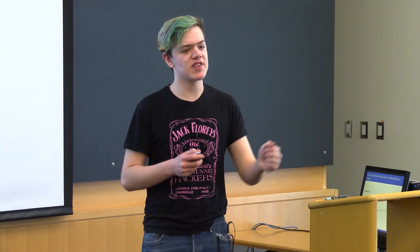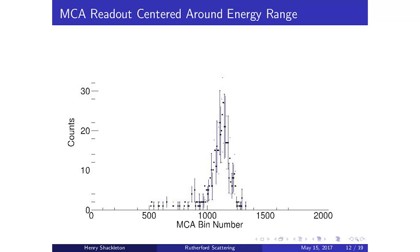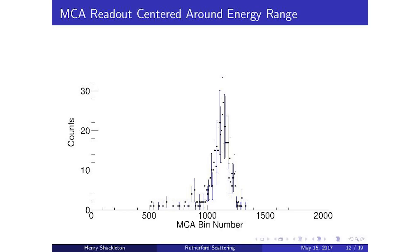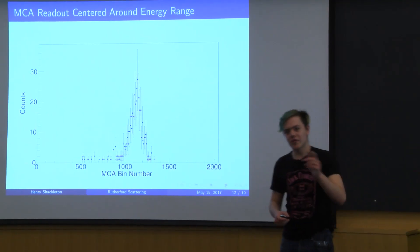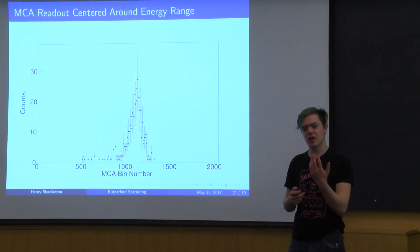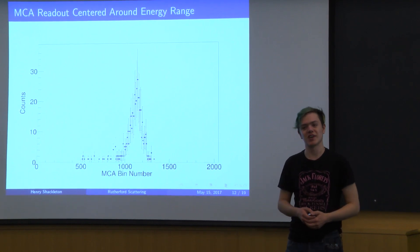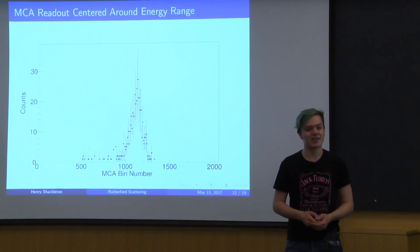We are now ready to collect data. We put the gold foil back in and measure at different angles between phi equals 10 and 60 degrees, letting the detector collect for a while. At each angle we obtain an MCA spectrum where the bin number corresponds to particle energy and the y-axis is count rate. This initially looks like a Gaussian, but energy loss through a material is actually described by a Landau distribution — a Gaussian with a slightly longer tail on one side.